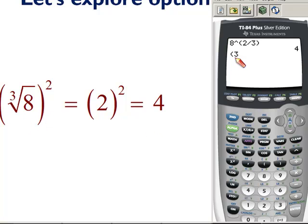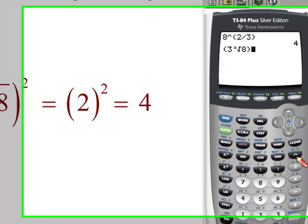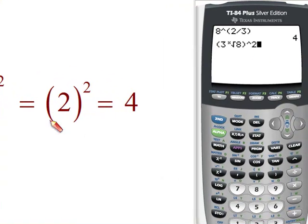The index is three. I press the math key. Number five. So now I have the third root of 8. I'm going to close my parentheses, and this is all squared. So it's all raised to the second, right? Everything inside parentheses is raised to the second. I press enter, and we get 4.